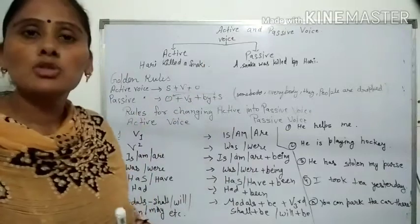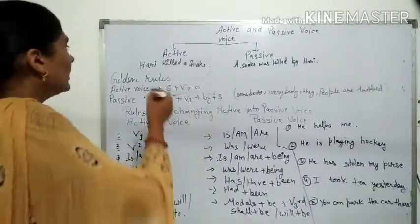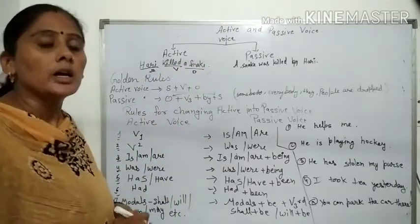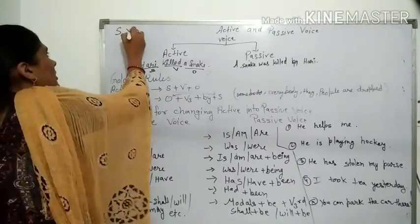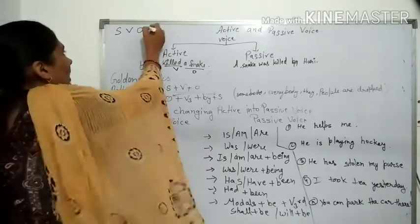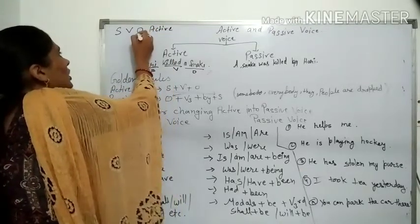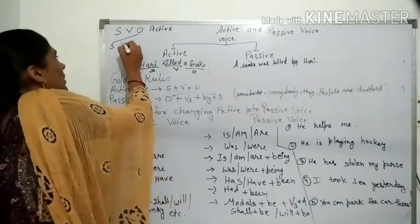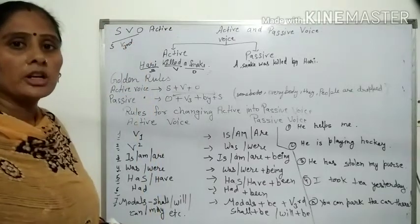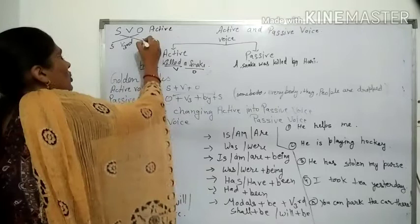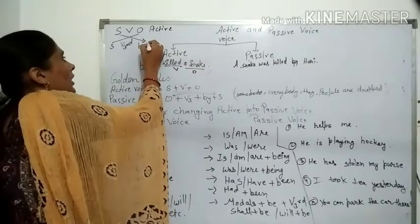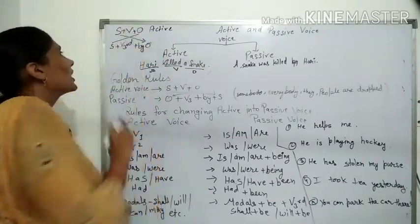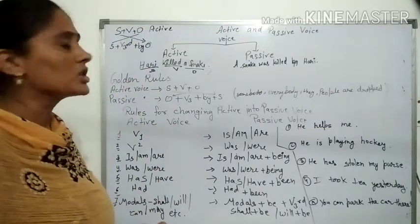जैसे sentence में subject, verb और object होता है। जब हम इसको active voice से passive voice में change करते हैं, तो जो object है वो change हो जाता है subject में। Verb में हमेशा verb की third form आती है। और जब subject को object बनाएं, उससे पहले हम 'by' का use करते हैं, और subject को object बना देते हैं — यह rule होता है changing का।